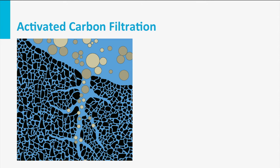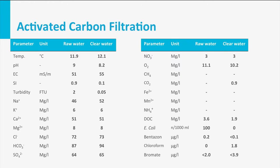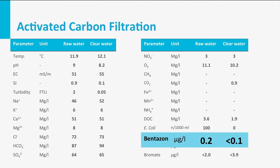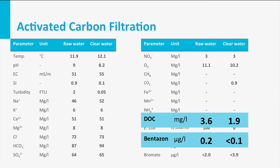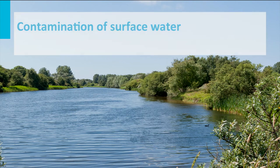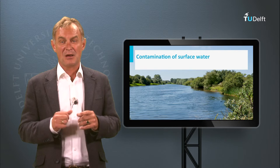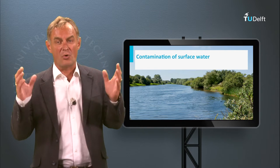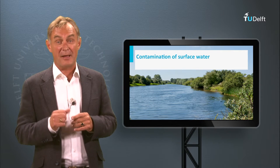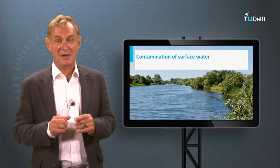Activated carbon adsorbs the dissolved organic matter, including pesticides, and removes it from the water phase. An example of such a treatment train is the former treatment system of Bereplaat of drinking water company Evides. As can be observed, the bentazone concentration is removed up to levels below the detection limit. As can be seen, some of the organic matter, measured as dissolved organic carbon or DOC, is removed as well. With the increasing contamination of the surface water and the improved detection methods, more and more organic micro-pollutants are found in the raw waters and even in drinking water. Not all endocrine disrupting compounds are removed by activated carbon adsorption. Therefore, alternative treatment methods had to be found.